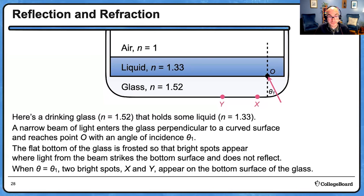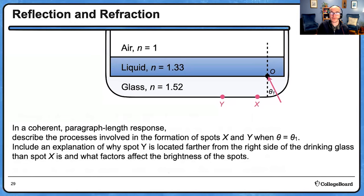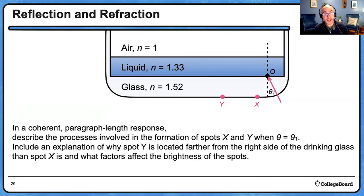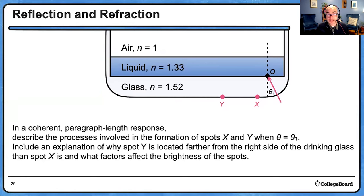The question says: in a coherent paragraph-length response, describe the processes involved in the formation of those dots. Include an explanation of why spot Y is located farther from the right side of the drinking glass than spot X, and what factors affect the brightness of the spots. There's a lot to a question like this. Readers are looking for specific physics points and several linked, on-topic, independent ideas. Parse out all the parts of this paragraph and make a list of what you need to write.